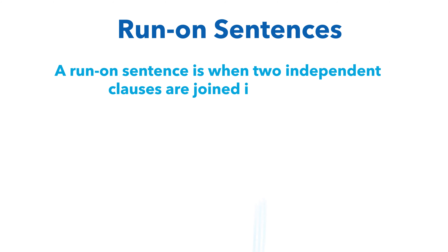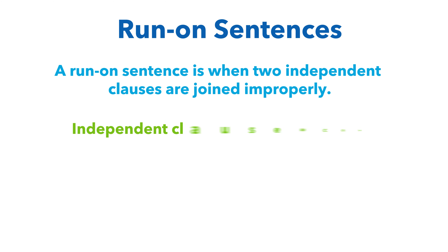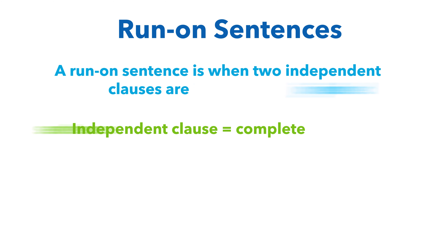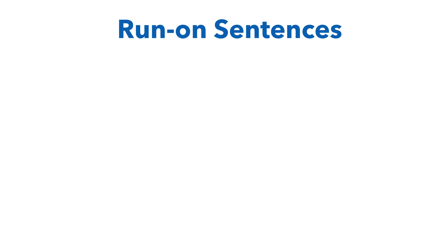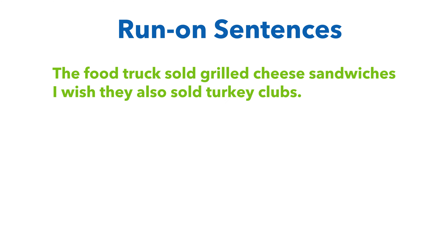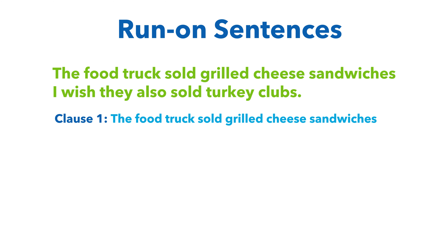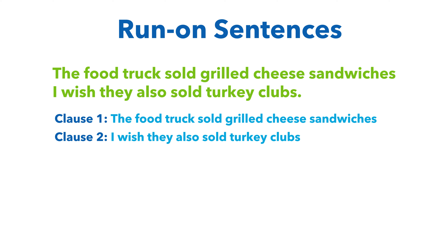A run-on sentence is when two independent clauses are joined improperly. An independent clause is a complete sentence. Here is an example: 'The food truck sold grilled cheese sandwiches I wish they also sold turkey clubs.' The first clause is 'The food truck sold grilled cheese sandwiches' and the second is 'I wish they also sold turkey clubs.' These two complete sentences have been joined without proper punctuation.